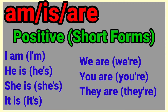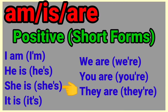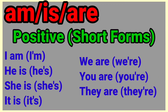AM, IS, ARE — positive short forms. The short form of I am is I'm. The short form of he is is he's. The short form of she is is she's. The short form of it is is it's. The short form of we are is we're. The short form of you are is you're. And the short form of they are is they're.